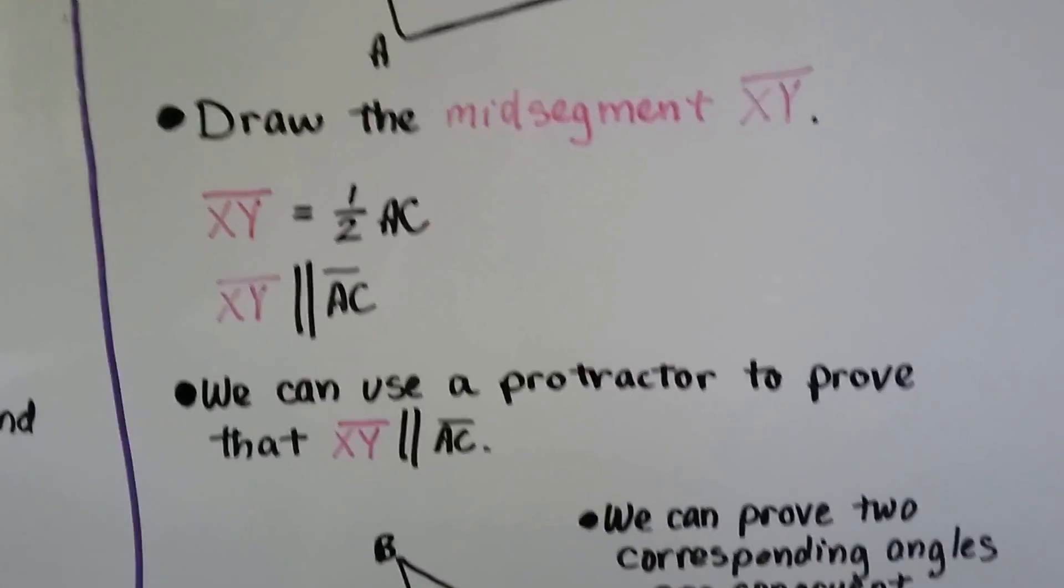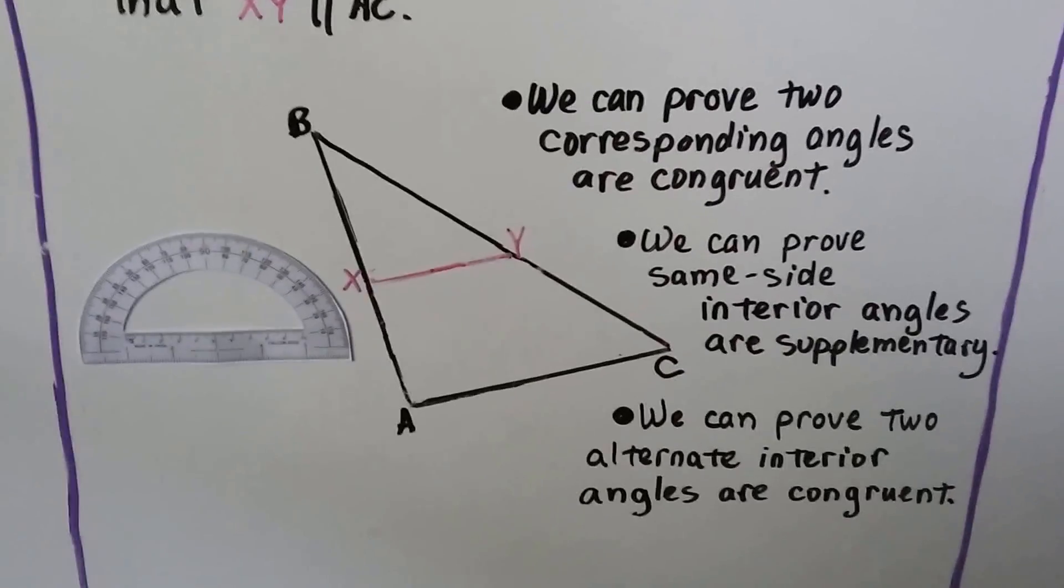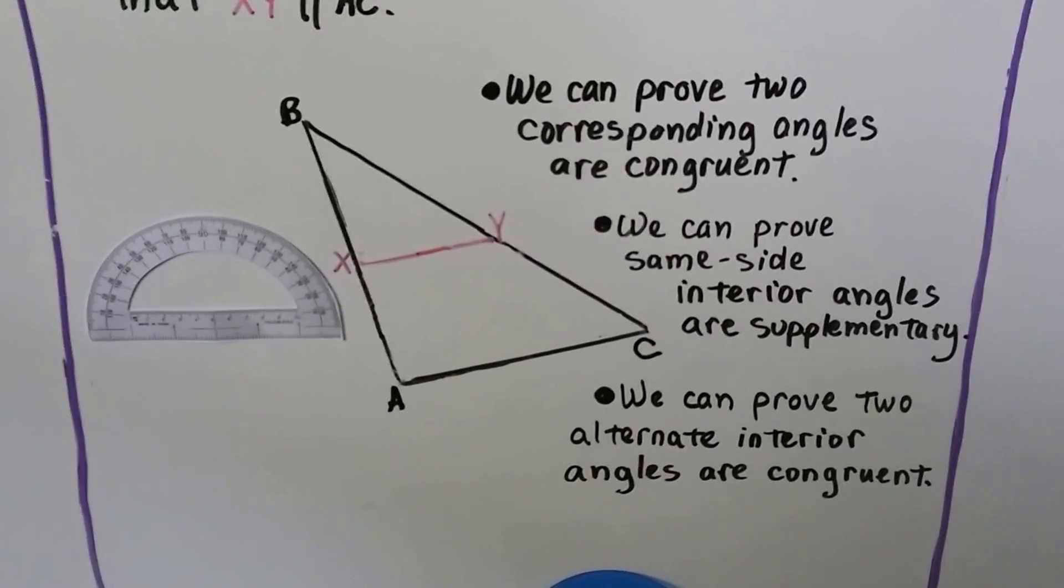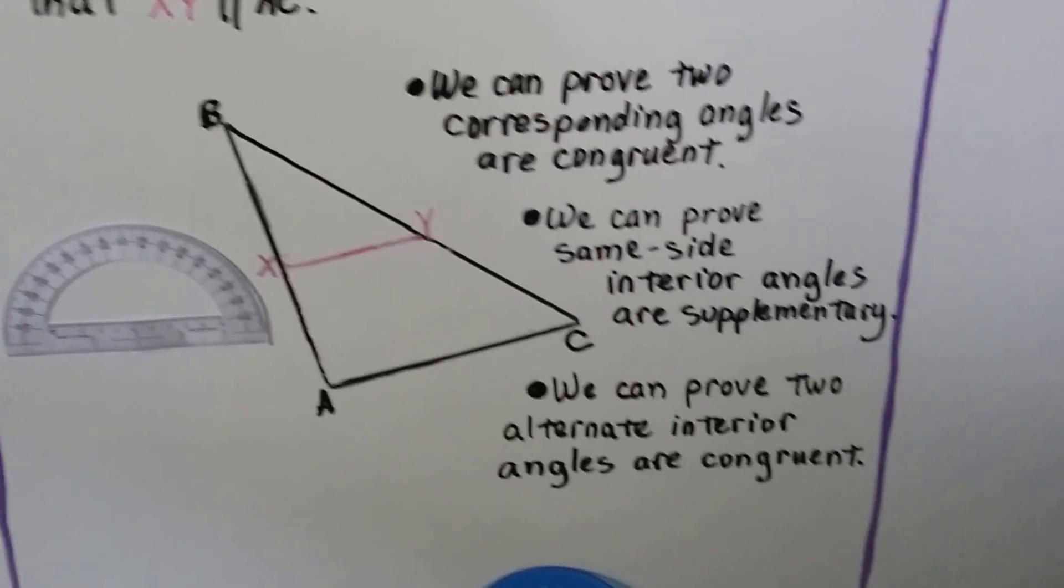And we can use a protractor to prove that segment XY is parallel to segment AC. We can prove two corresponding angles are congruent. We can prove same-side interior angles are supplementary. And we can prove two alternate interior angles are congruent. Just measure them with our protractor.